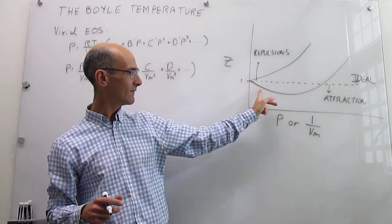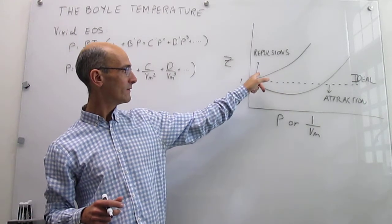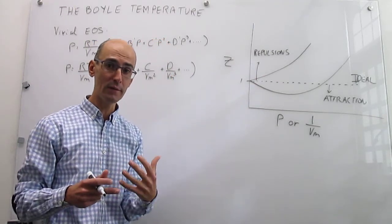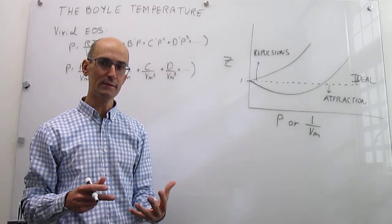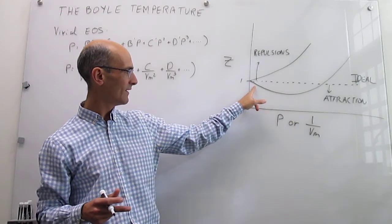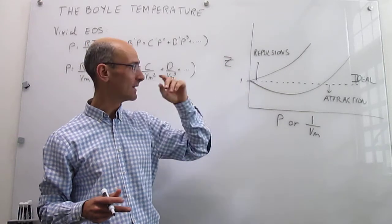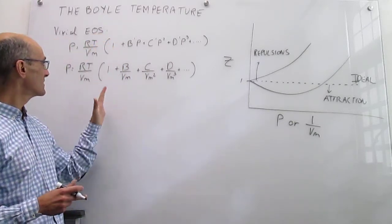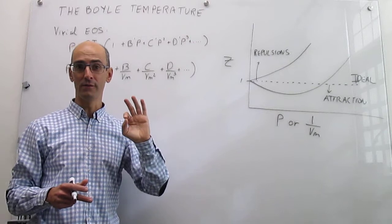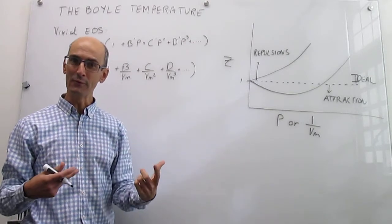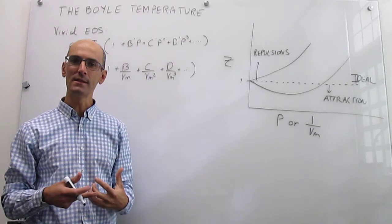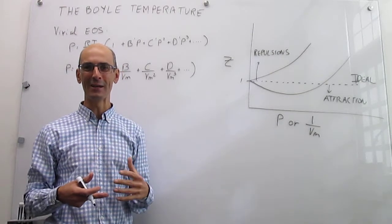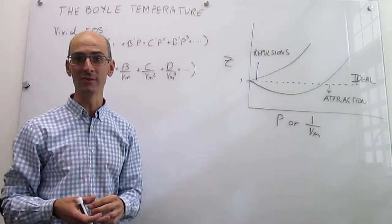Notice that one curve approaches 1 from below and the other curve approaches that limiting ideal case from above. If you think about it, the first derivative is different in these two approaches — here the first derivative is negative, that slope is negative, and here the first derivative is positive. So what we are going to do is take first derivatives of these expressions as a function of pressure and see where those signs lead us in terms of reconciling the values of those constants with the dominating interactions in the gas.